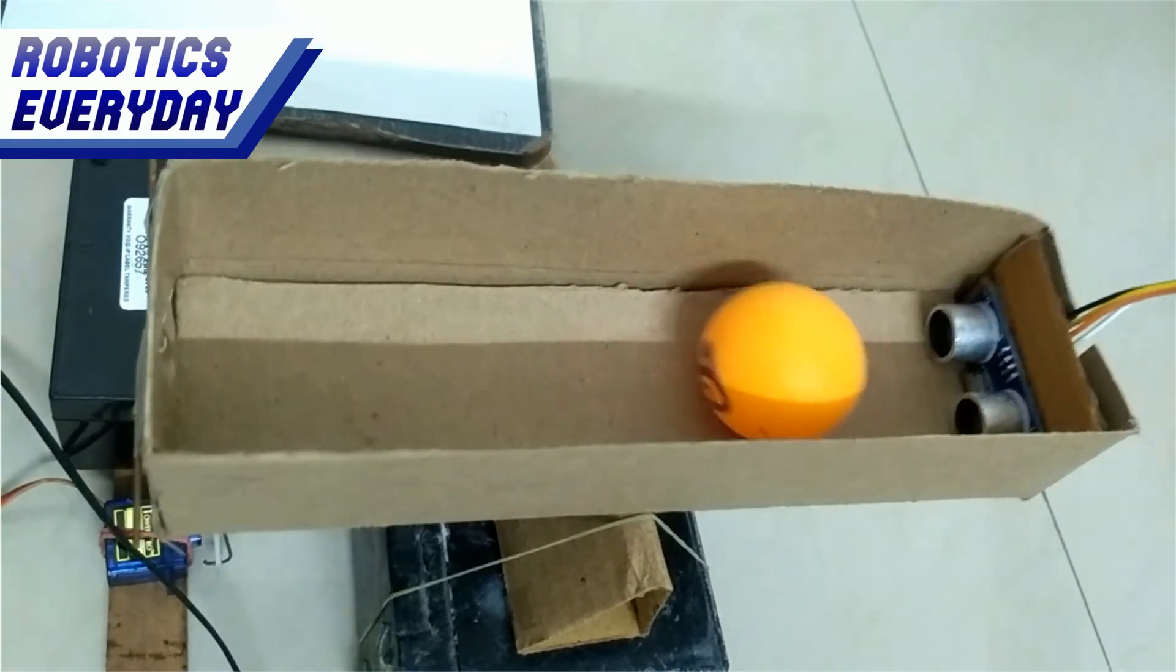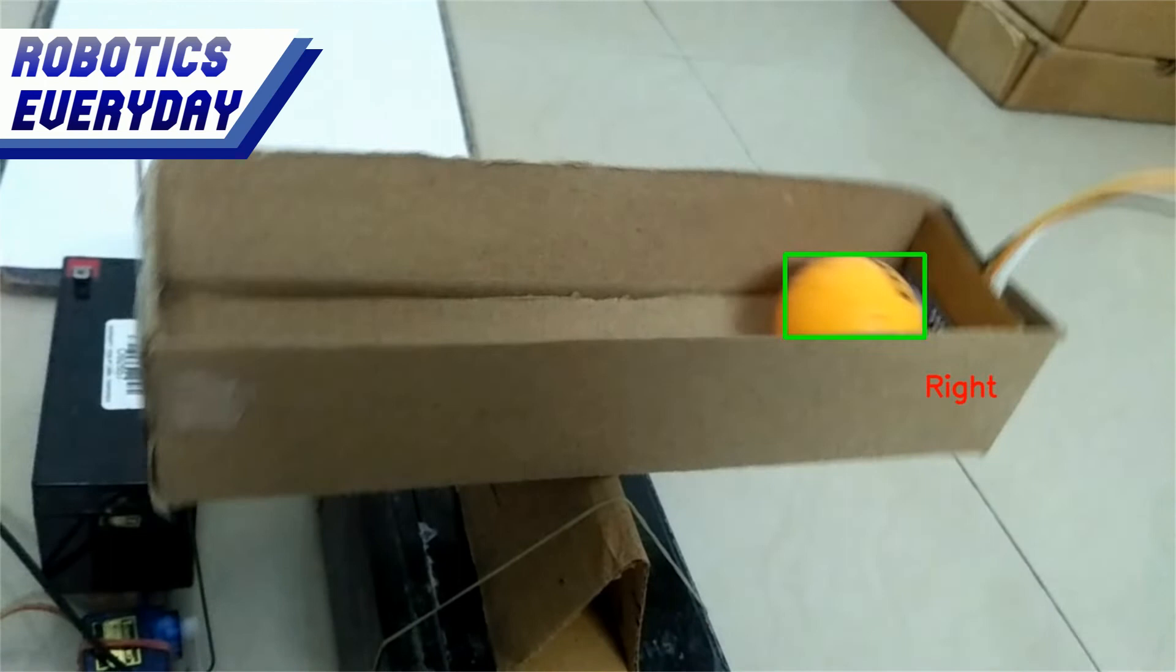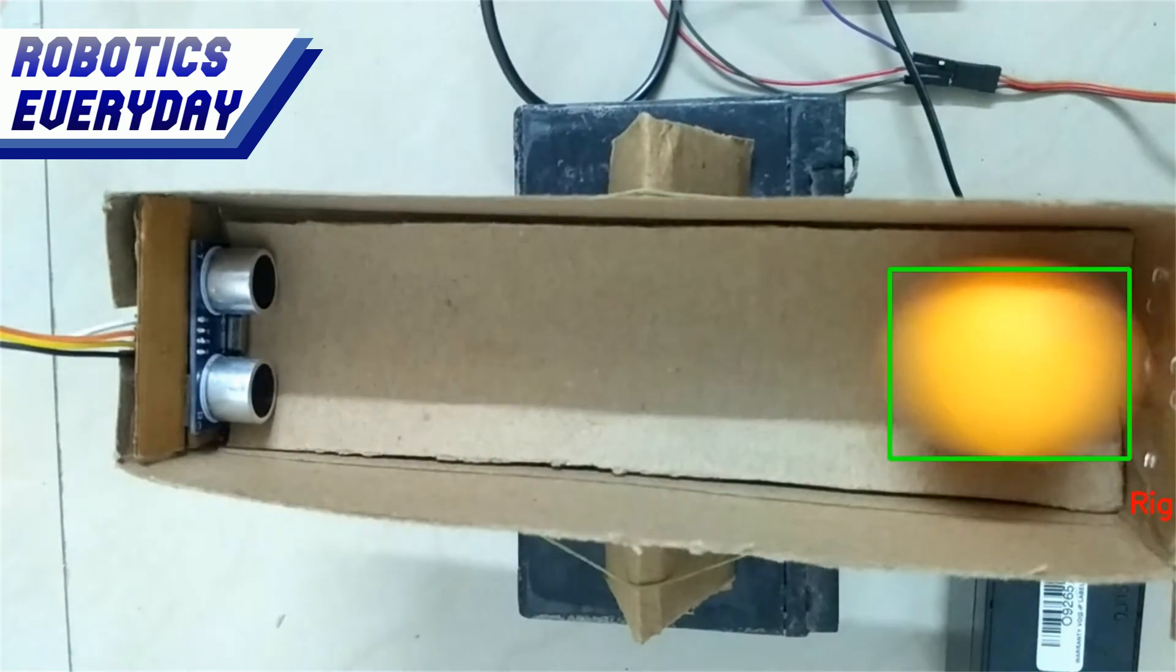This is a ball balancing robot. It will try to balance the ball in the middle. We have used distance sensors as well as image recognition techniques to keep it balanced. Let's see how.